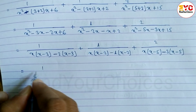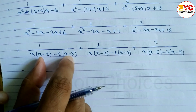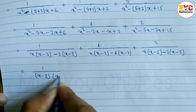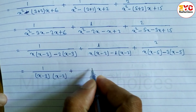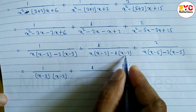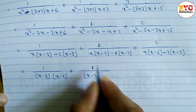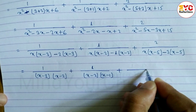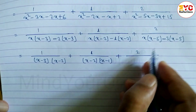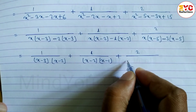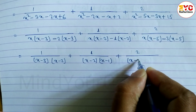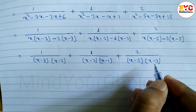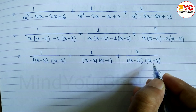Now we can see: 1 divided by (x − 3)(x − 2). Similarly for the second denominator — x minus 2 and x minus 2, so we take x minus 2 common, remaining x minus 1, giving (x − 2)(x − 1). Plus 2 divided by (x − 5)(x − 3). Hope you understand up to here.